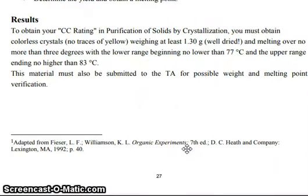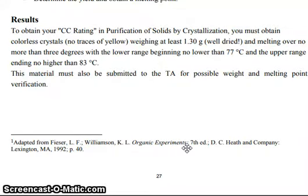What are the results? To obtain your CC rating in purification of solid by crystallization, you must obtain colorless crystals with no traces of yellow, weighing at least 1.30 grams when dry, and melting over no more than a 3 degree range — beginning no lower than 77 degrees Celsius and upper range ending no higher than 83 degrees Celsius. This material must also be submitted to the TA for possible weight and melting point verification.